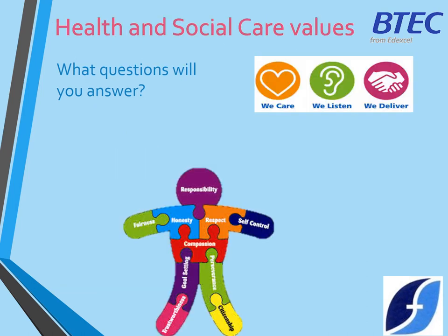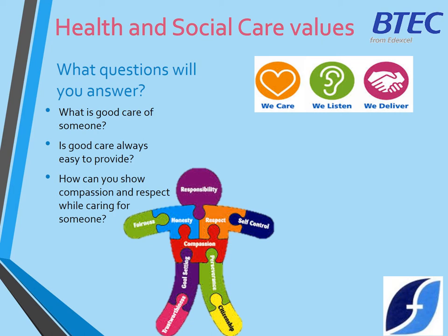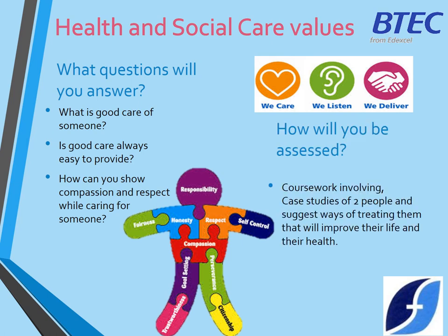The next unit is Health and Social Care Values. Typical things we think about with this one are: what is good care of somebody else? Is good care always easy to provide? And how can you show compassion and respect whilst caring for someone? If someone usually needs a higher level of care, they can typically be a little bit vulnerable, so being able to show compassion and respect to that person can be of utmost importance to their wellbeing. This unit is again assessed through coursework. We use case studies of two different people and suggest ways of treating them that will improve their life and their health, looking at a range of different services and what benefits they would bring to the individuals, as well as the way they want to be cared for.